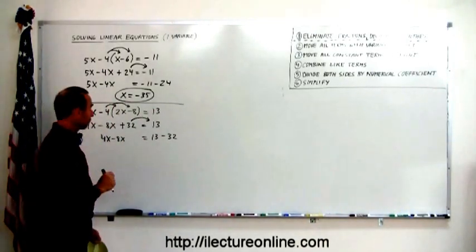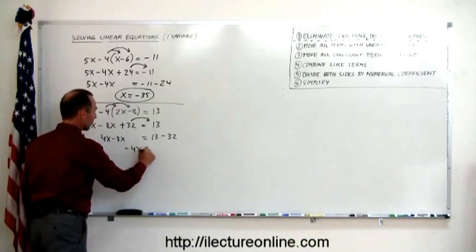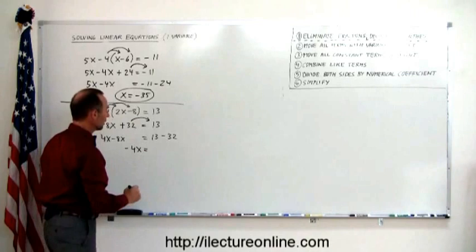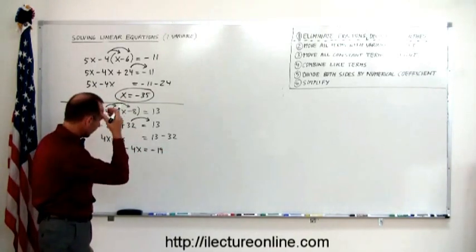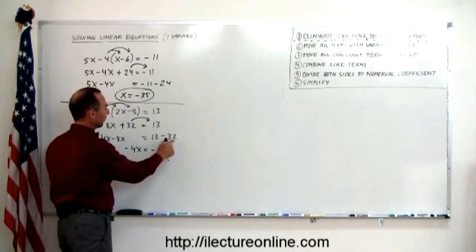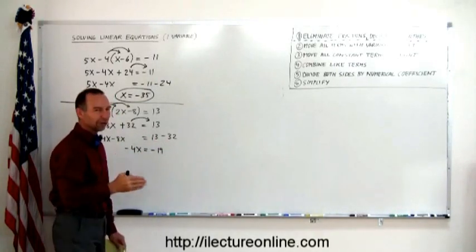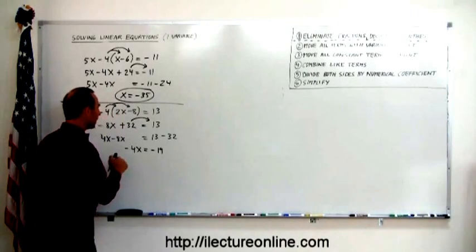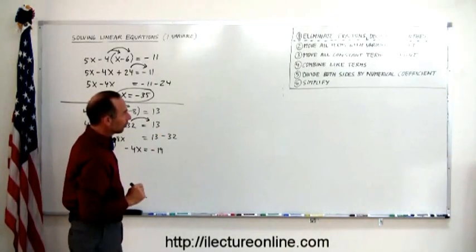Then we combine like terms. 4x minus 8x is a minus 4x equals 13 minus 32 is a minus 19. You may say, how does he do that so quickly? Well, what I do is this. I have minus 32. I add first 10 to that. That becomes minus 22. Then add another 3 to that. That becomes minus 19. So if I do it one step at a time in my head, it's not so bad.